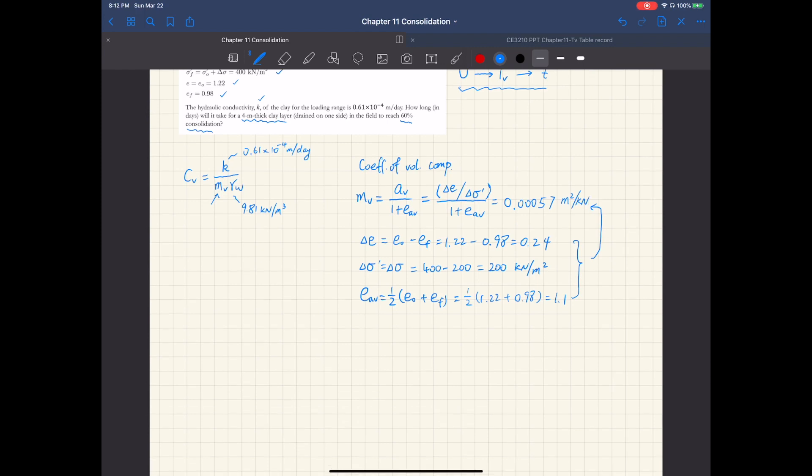And then the coefficient of consolidation C sub V is 0.61 times 10 to negative 4 over M sub V, which is 0.00057, times the unit weight of water, 9.81. So this gives us C sub V of 0.0109 meters squared per day.